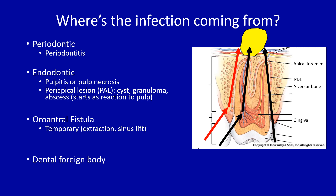Another very common type is an oroantral fistula — a direct communication between the oral cavity and the maxillary sinus. These can be temporary after a dental extraction or sinus lift procedure, or permanent if they do not heal. Lastly, you can have a dental foreign body such as a dislodged tooth root after extraction, a dental implant, or extruded root canal material going directly into the sinus.